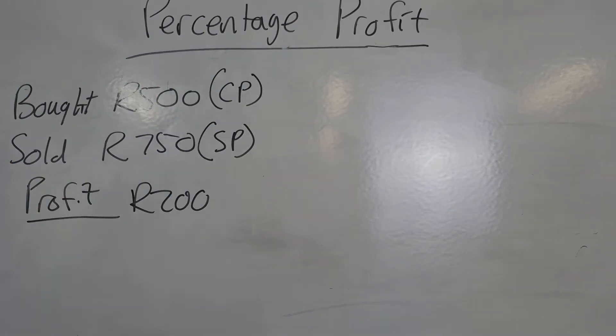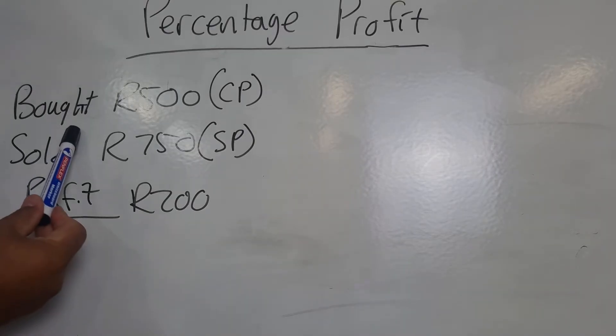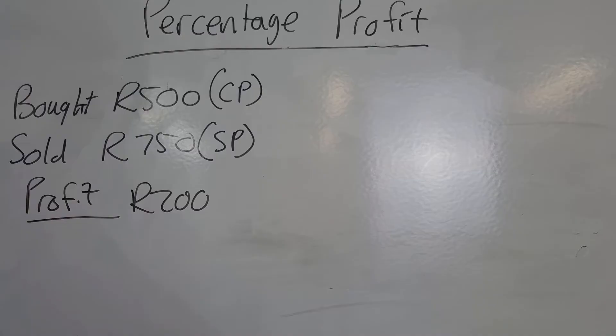Hi there learners, and welcome to our next video where we're talking about profit. But now we've moved on from the rand value to percentage profit. Building on from the previous example, remember I bought a product for 500 rand, that was my cost price. I sold it for 750 rand, that was my selling price, so I made a profit of 200 rand. But I want to express that as a percentage.